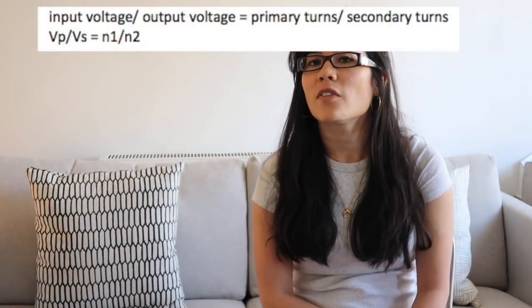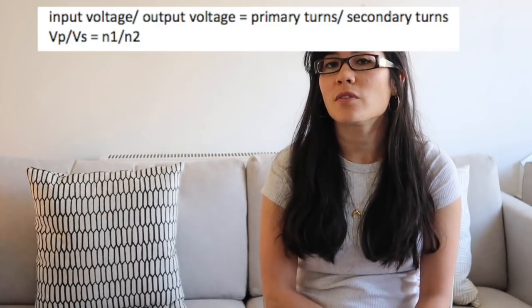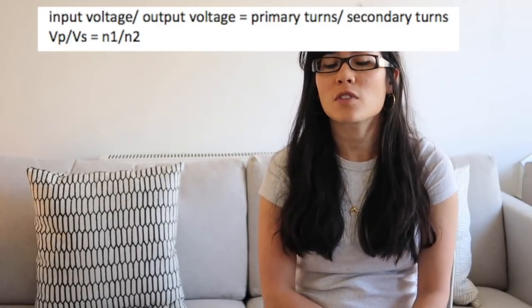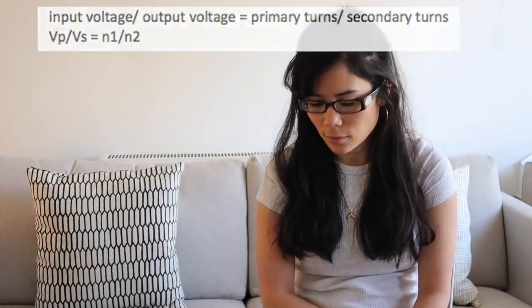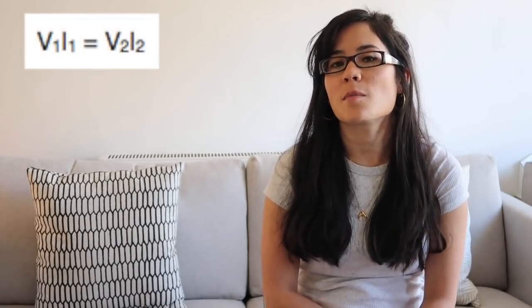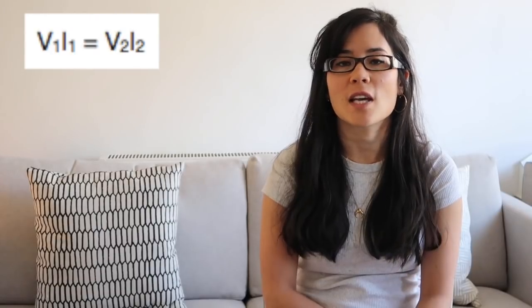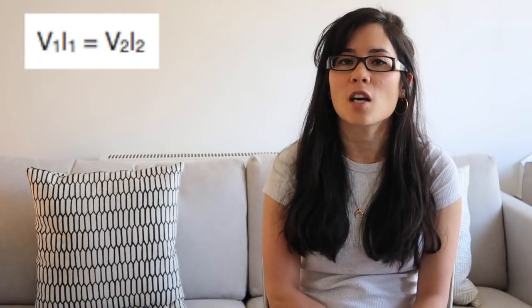Looking at magnetism — what's the equation linking voltage and number of turns? That is input voltage over output voltage equals number of turns on the primary coil over number of turns on the secondary coil. What's the equation linking voltage and current in the magnetism topic? Voltage primary times current primary equals voltage secondary times current secondary.